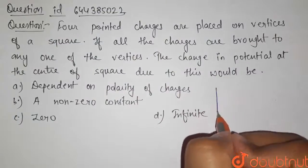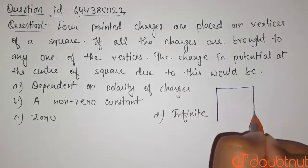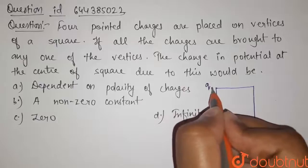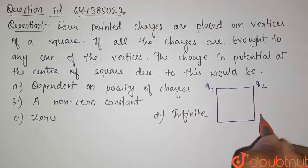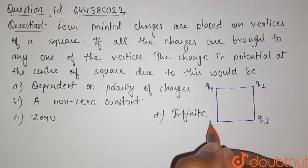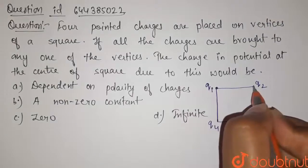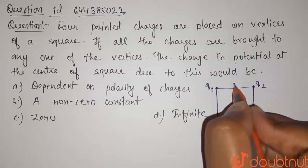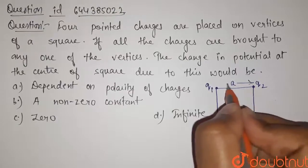So here we have been given that four charges. Let us suppose the charge on first charge is q1, second is q2, third one is q3 and fourth one is q4. These four charges are placed on the vertices of a square. Let us take the length of this square be a.